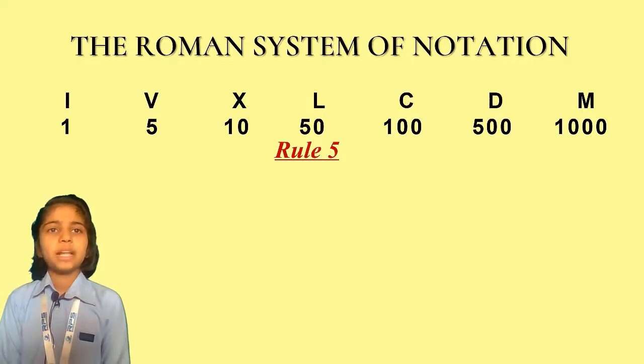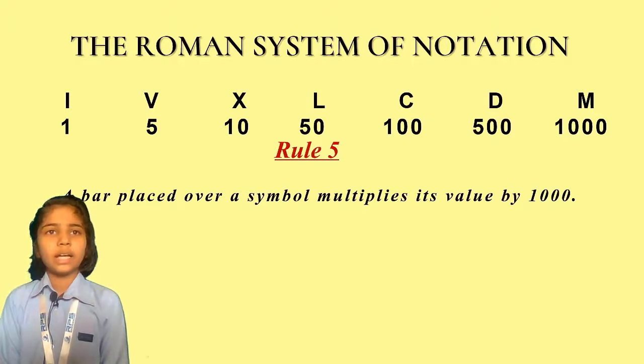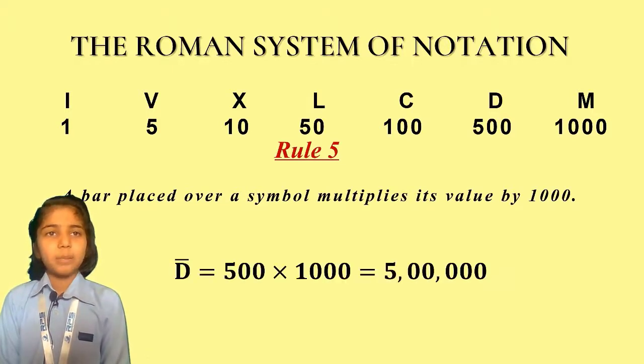Rule number 5. A bar placed over a symbol multiplies its value by 1000. For example, D bar equals 500 multiplied by 1000 equals 5,00,000.